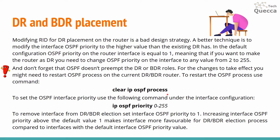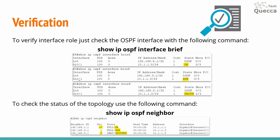To set the OSPF interface priority, use the following command under interface configuration: ip ospf priority, specifying a value from 0 to 255. To remove an interface from DR-BDR election, set the interface OSPF priority to 0. Increasing the interface OSPF priority above the default value of 1 makes the interface more favorable for the DR-BDR election process. To verify the interface role, use the command show ip ospf interface brief.